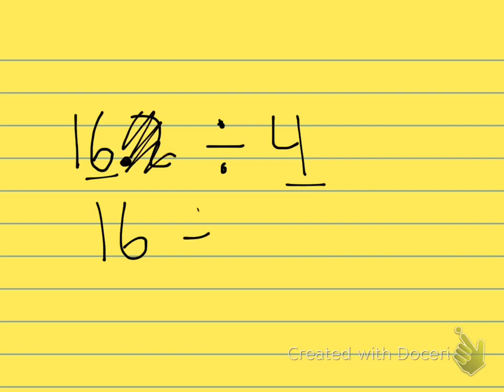Another example would be this. If we had 16 and 2 tenths being divided by, let's say, 4. Well, 4 and 16 are compatible as is. So I would keep that 16 as a 16, drop the decimal, divide it by 4, and my estimated answer would be 4.